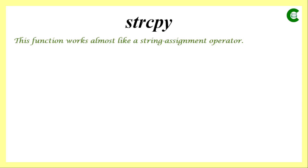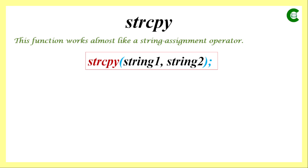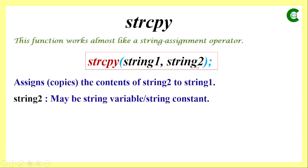The second string function is strcpy, which copies the value of one string to another — it works like an assignment operator. The syntax is: strcpy within parentheses with two arguments, string1 and string2, separated by a comma. The value of string2 is assigned to string1, and whatever string1 previously contained is erased. The whole statement is terminated by a semicolon. Note that string2 may be a string variable or a string constant, but string1 must always be a string variable.